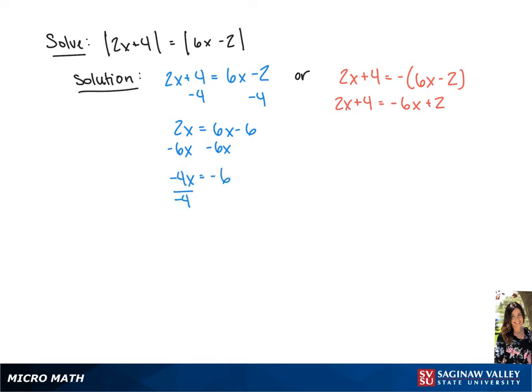Last, we're going to divide each side by negative 4, giving us 6 over 4, or we can simplify this to 3 over 2.